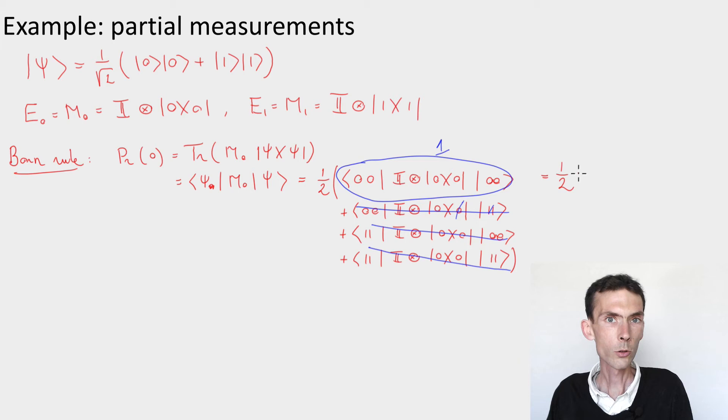As you would expect, right, we're measuring the second qubit of the EPR pair in the standard basis. We know intuitively that the outcomes should be a half. Probability a half, we get 0. Probability a half, we get 1. And so indeed this is what the case is here. We've done the calculation for the outcome 0. And the same calculation would reveal that the probability that you obtain the outcome 1 when you perform this POVM is again equal to a half.